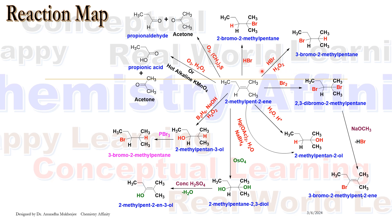When the same reaction is performed in presence of hydrogen peroxide it follows anti-Markovnikov's addition. That means Br attacks to the less substituted carbon and hydrogen attacks to the more substituted carbon.